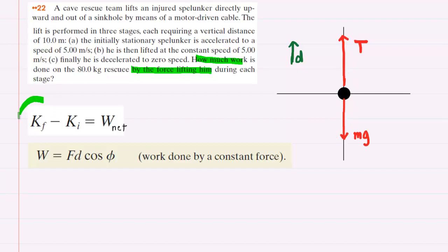We know from the work kinetic energy theorem that the final kinetic energy minus the initial kinetic energy will equal the net work done on the spelunker. So we're going to rewrite this equation. For the final kinetic energy we'll have one half mass final speed squared minus one half mass initial speed squared.